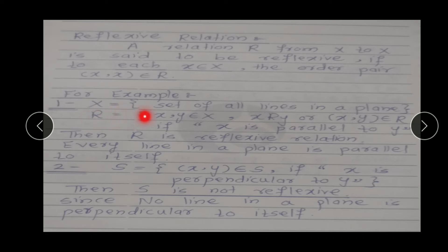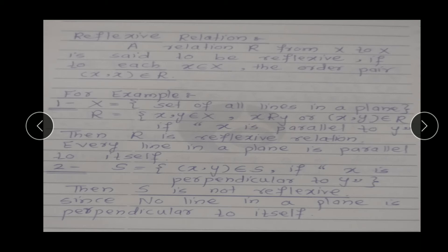For example, let our set capital X = set of all lines in a plane. तो हमारे set में जितनी भी lines हमारे plane में present हैं, वो include होंगी. Relation R is defined as: (x, y) belongs to capital X, where x and y represent two lines, x related to y, and (x, y) belongs to R if x is parallel to y. Then R is a reflexive relation, because every line in a plane is parallel to itself — हर line वो खुद के parallel होती है. Therefore (x, x) belongs to capital R, means x is R related to x. Hence it becomes reflexive relation.